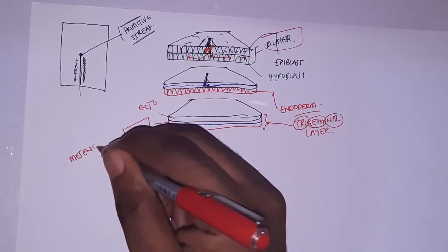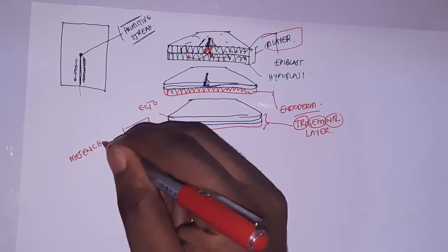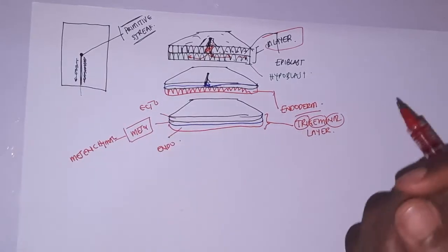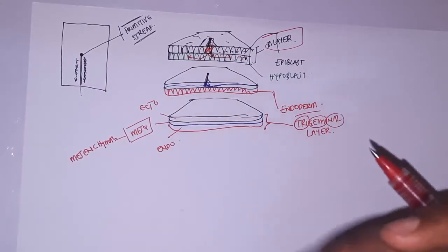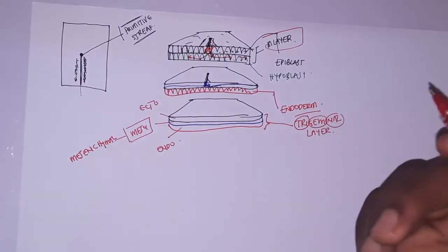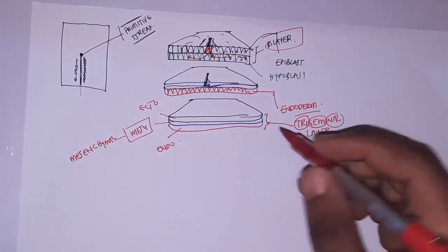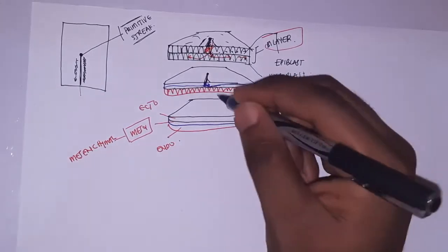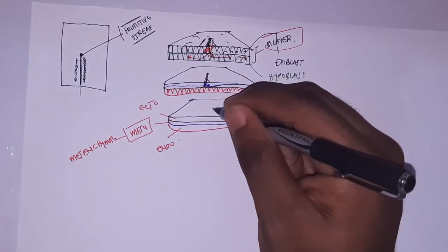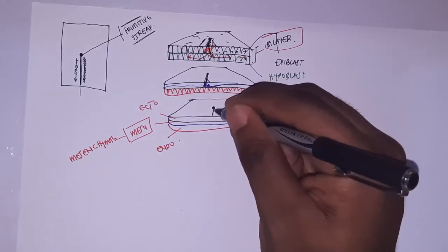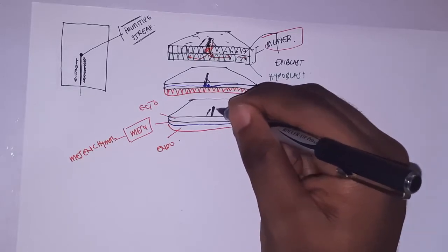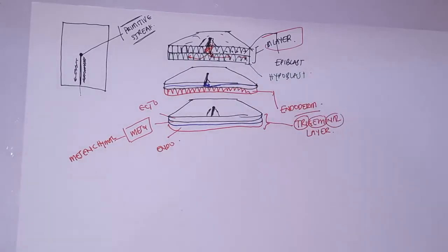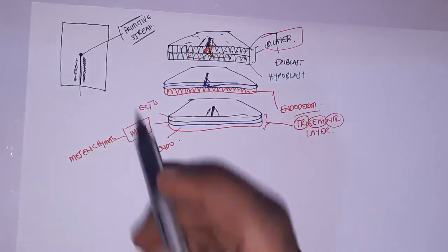The mesoderm is made up of mesenchymal tissue — cells that freely move about and are not attached together. Remember, you still have the primitive streak running down through this layer.